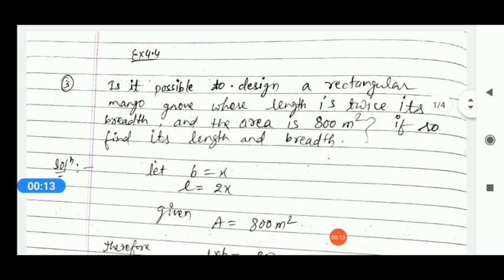Let's see what is given in question number 3. Is it possible to design a rectangular mango grove whose length is twice its breadth and the area is 800 square metres? If so, find its length and breadth.